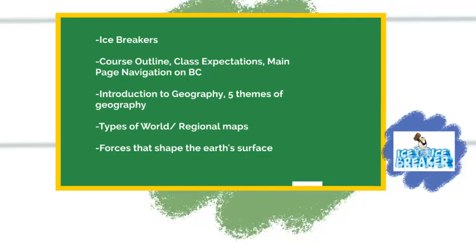The next thing we're going to move on to are the types of world and regional maps. We'll definitely use the textbook for this. We're going to look at different types of projections and how geographers are able to use photographs, geographic information systems, and digital maps to show the Earth's surface. We'll also be analyzing these images, projecting the three types of map projections, and using scales to understand the differences between each type. Perhaps you can bring in your own examples and share what areas you are familiar with on a regional or world level.